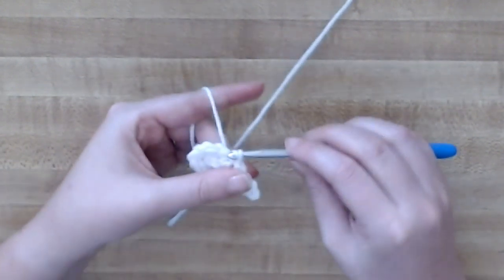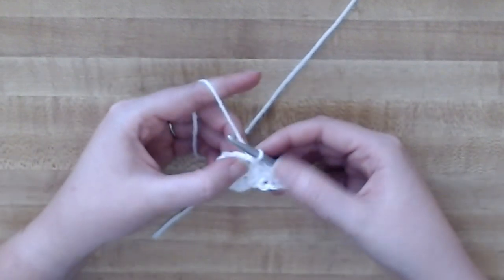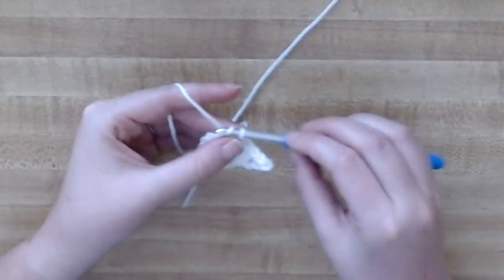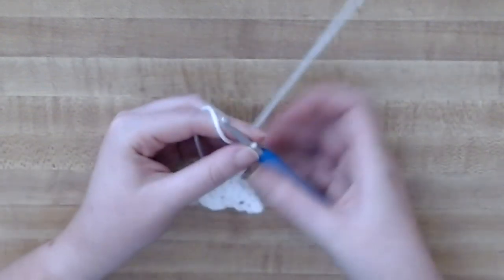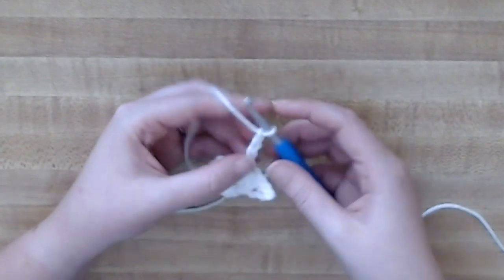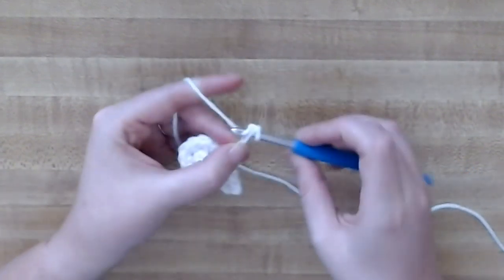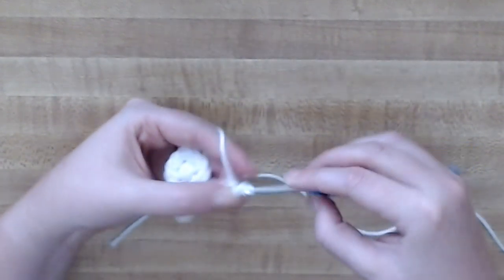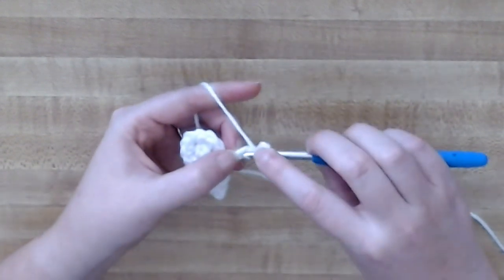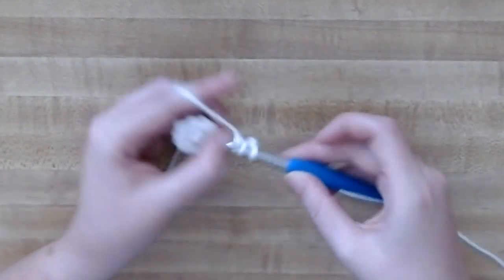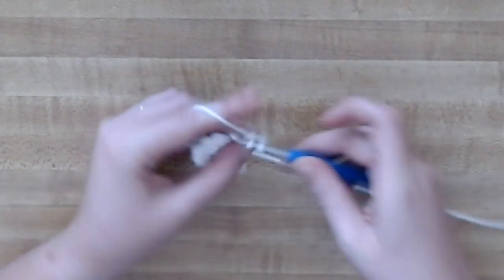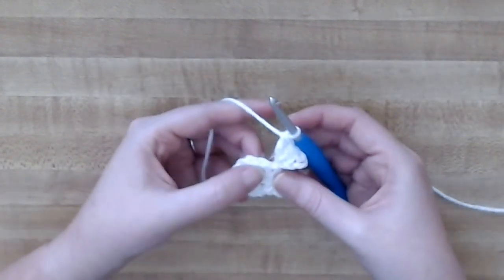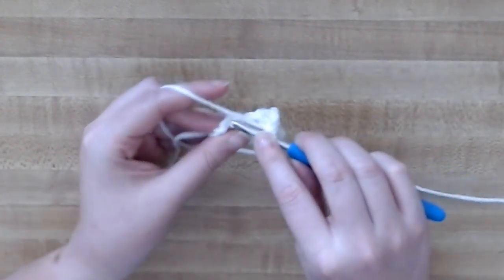Now chain four and repeat the process again. So you will, in the second chain from the hook, slip stitch. In the next chain do a half double crochet, and in the third chain do a double crochet. Then skip a stitch and slip stitch in the next one. You're going to repeat this until there's five points.